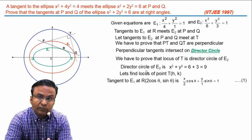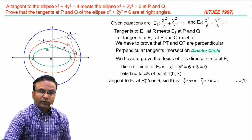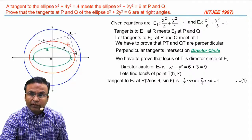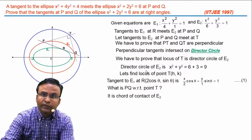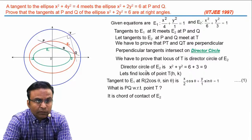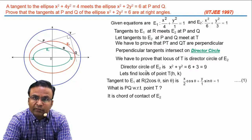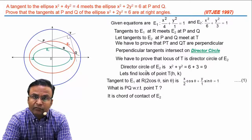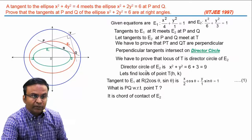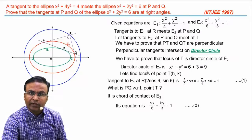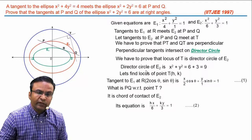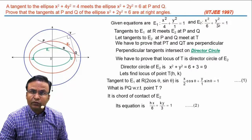With respect to point T, line PQ is the chord of contact of ellipse E2. Using the replacement method — replacing x² with hx and y² with ky — the chord of contact PQ with respect to point T for ellipse E2 is: hx/6 + ky/3 = 1.